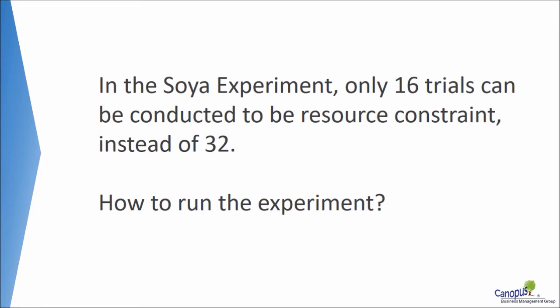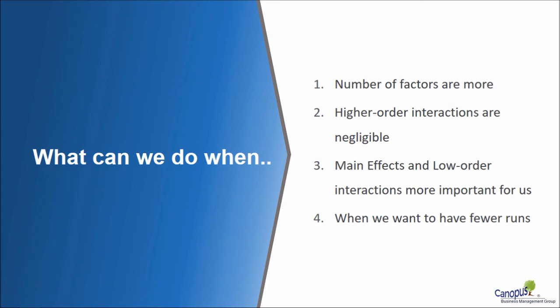So let's understand how do we generalize this problem. When the number of factors are more, instead of having five factors, let's say I had eight factors and I have only 32 runs that I can perform, then what can I do?